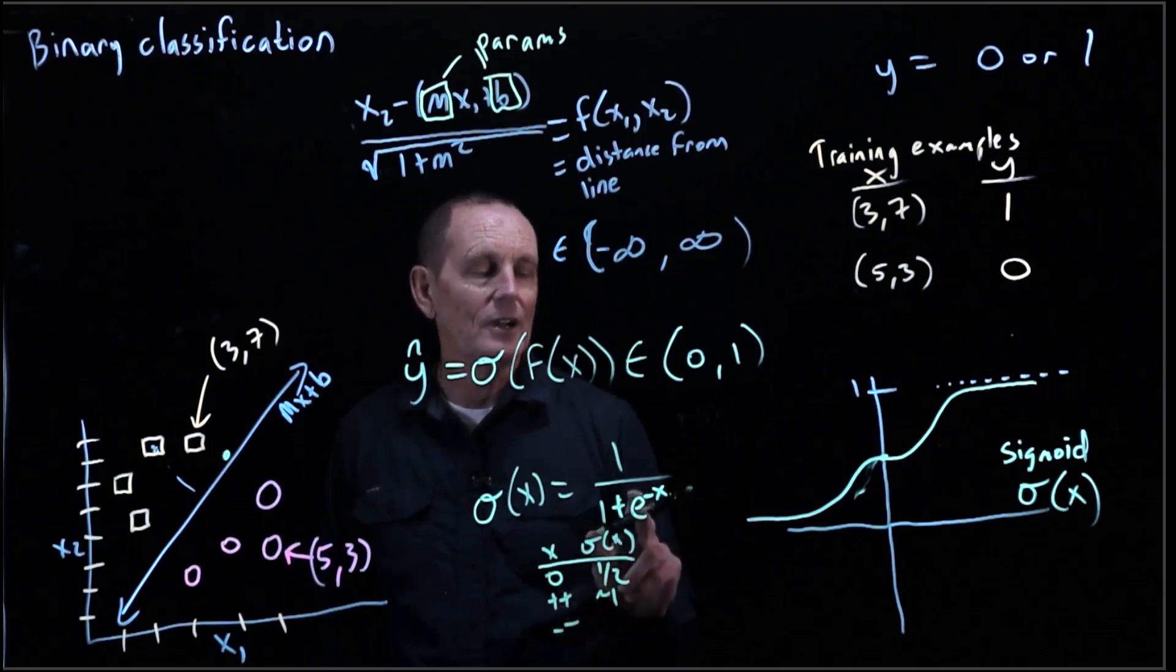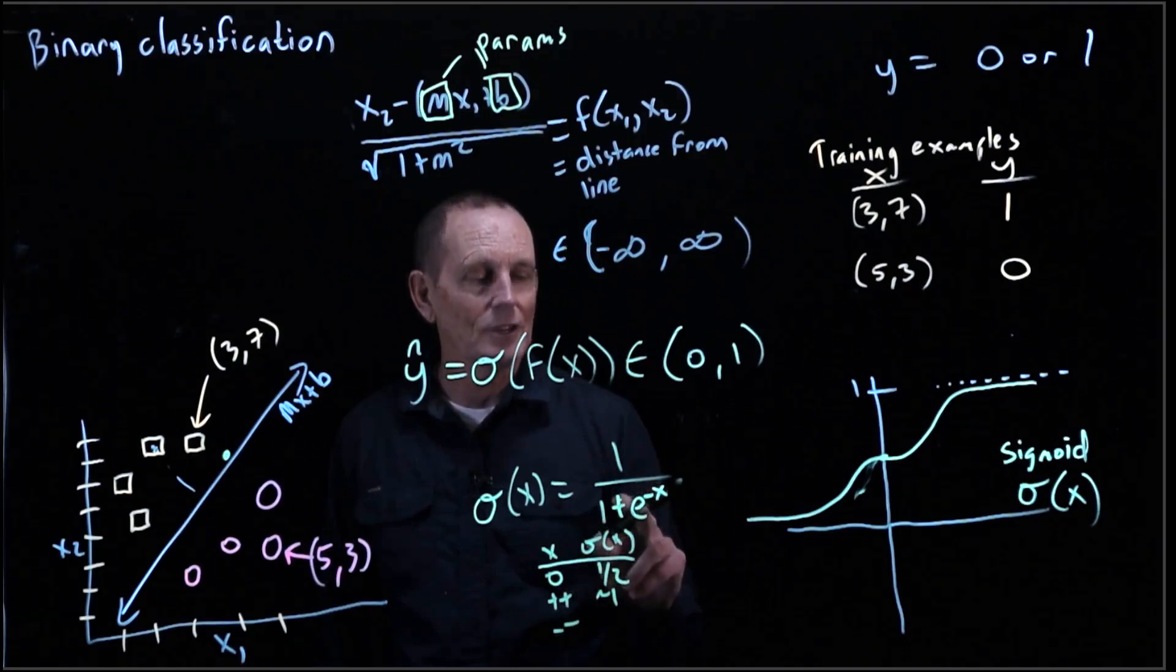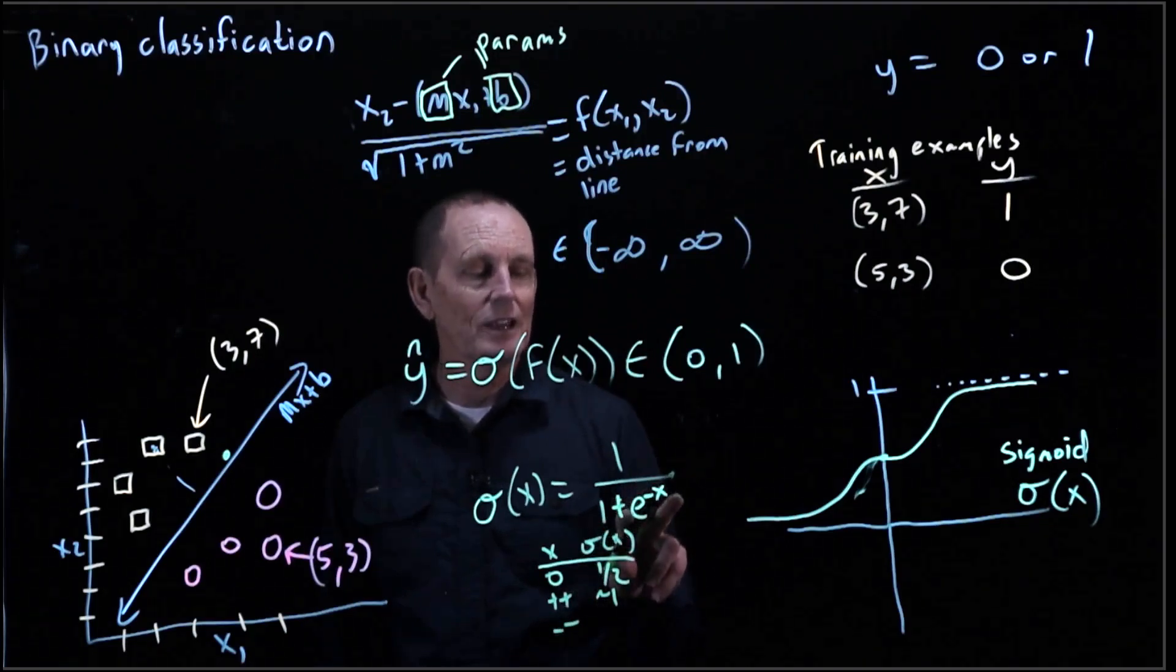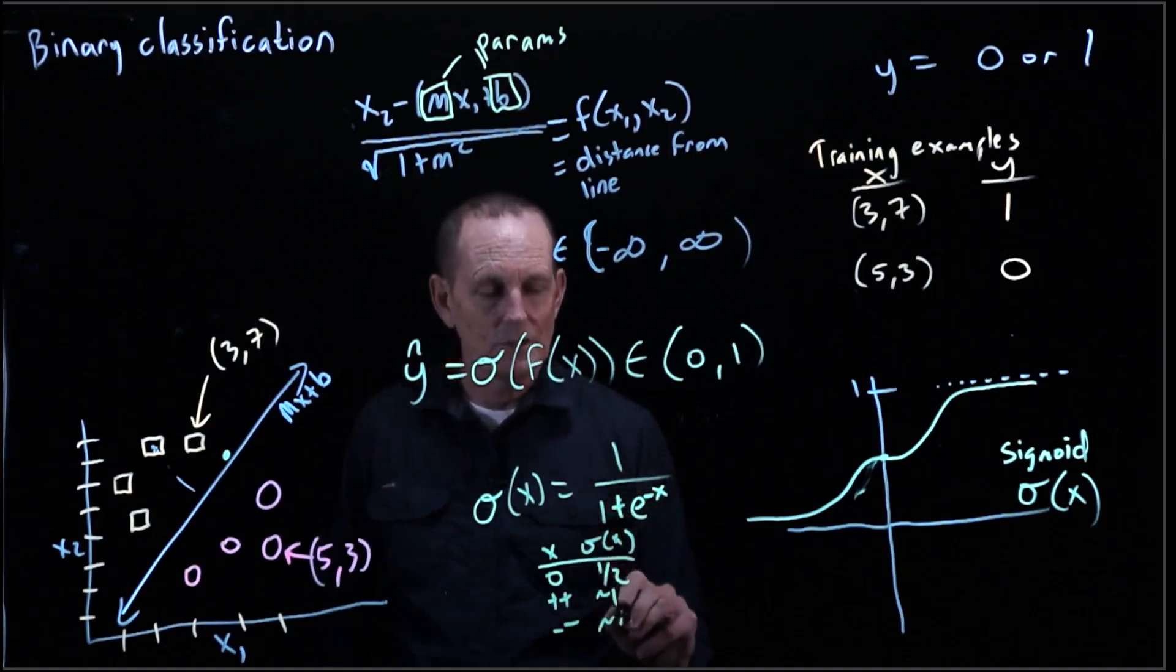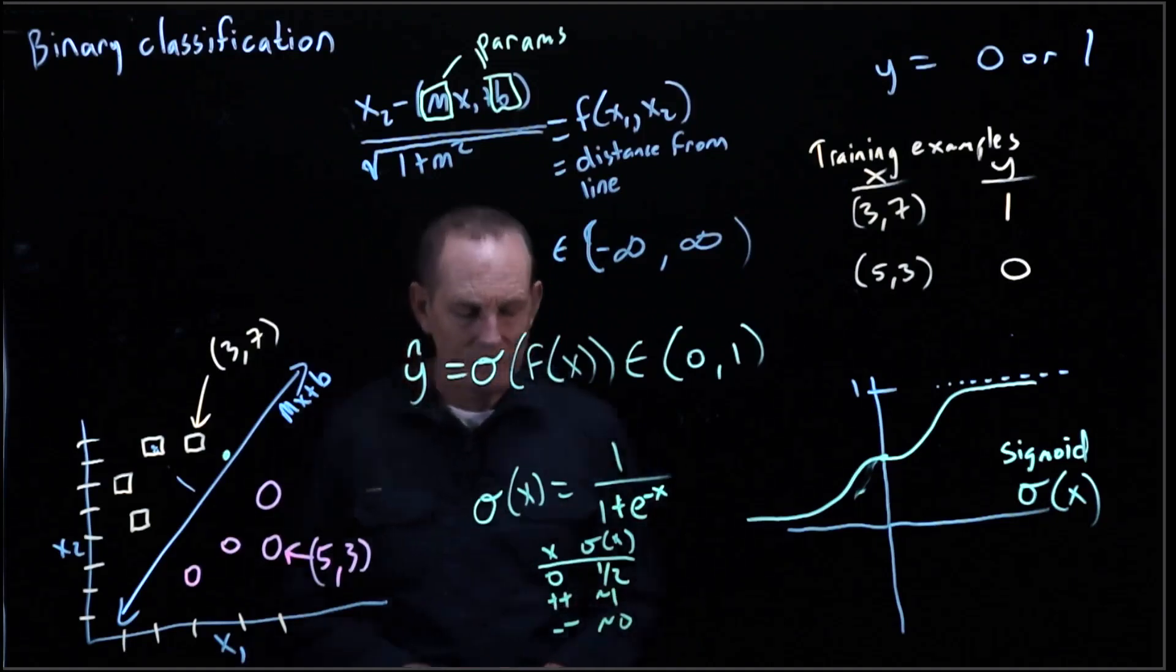And if we get a very negative number, this becomes e to the minus a negative number. So that's e to a positive number. So this becomes very big. And so this becomes 1 over a large denominator, which is approximately 0. So that seems to fit.